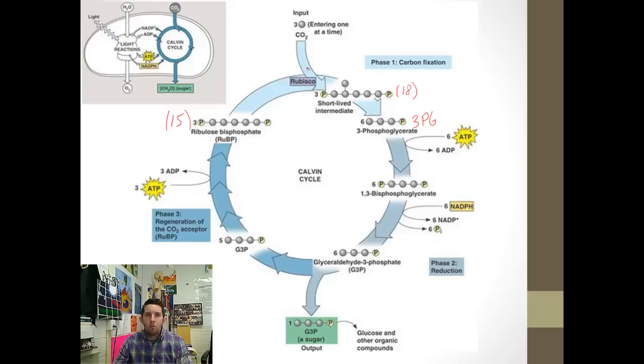Rubisco is a really quite amazing molecule. If you think about what it does, it pulls something out of a gaseous state and incorporates it into a molecule that can be used for food. Rubisco is probably the most abundant protein on the face of the earth and is definitely the key to life itself. Without rubisco, no way we're here. We're at 3PG. We've finished the carbon fixation phase.